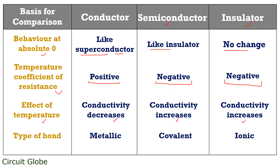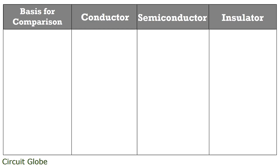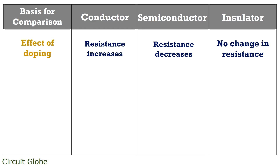Talking about the type of bond that exists in the atomic structure: conductors have metallic bonding, semiconductors have covalent bonding, and insulators have ionic bonding. Now comparing on the basis of effect of doping: when doping is done, resistance of conductors increases while that of semiconductors decreases. However, there is no change in resistance of insulators even when doping is done.